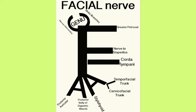The two sides of the C represent the motor branches and the nervus intermedius, which lead up to the genu. And then from the genu, you have a branch off towards the petrosal region — that's the greater petrosal nerve. And then you have the main branch continuing down and giving branches to stapedius and chorda tympani.